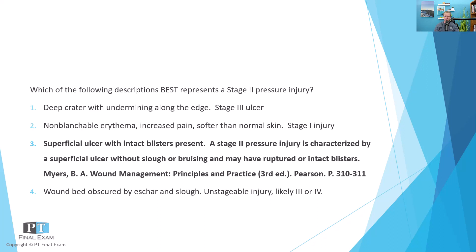Looking at the other answer options: number one, a deep crater with undermining along the edge, would be classified as a stage three pressure ulcer. A stage three does extend into the underlying subcutaneous tissue. A stage four — not listed here — is likely to extend into bone, tendon, or ligaments, into the very deepest underlying fascia.